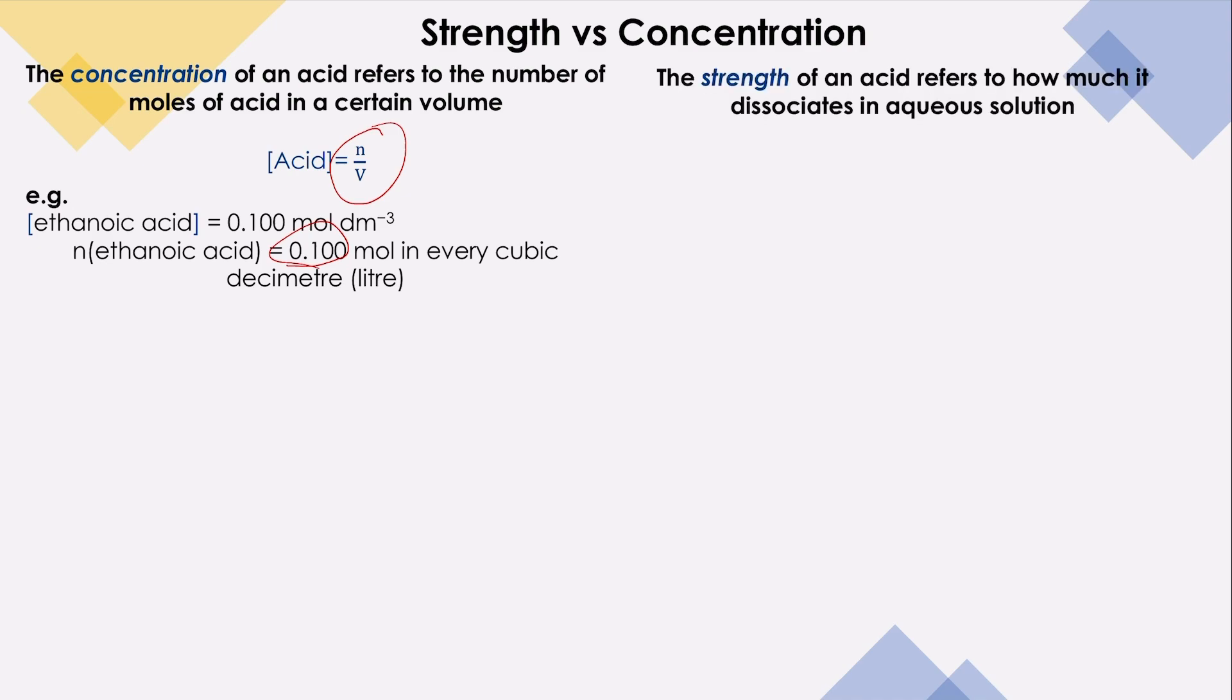While the strength is referring to how much the acid or base will dissociate in aqueous solution. Strong acid or base will fully dissociate in water according to the following equation. Why can I say that this is representing strong acid? Because we have one-way arrow.